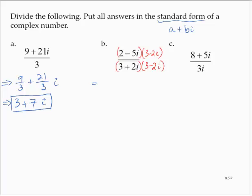So that would yield in the numerator 6 minus 4i minus 15i plus 10i squared. In the denominator, I would have 9 minus 6i plus 6i minus 4i squared. Now recall in both the numerator and denominator that i squared is negative 1.